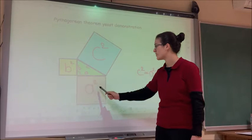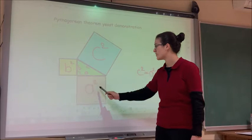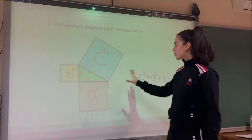We have also three squares consisting respectively with the sides of the triangle. We know the area of the square, so we have the area of the first one is B square, then A square and C square. Through this method we will prove the Pythagorean theorem which is C square is equal to A square plus B square.